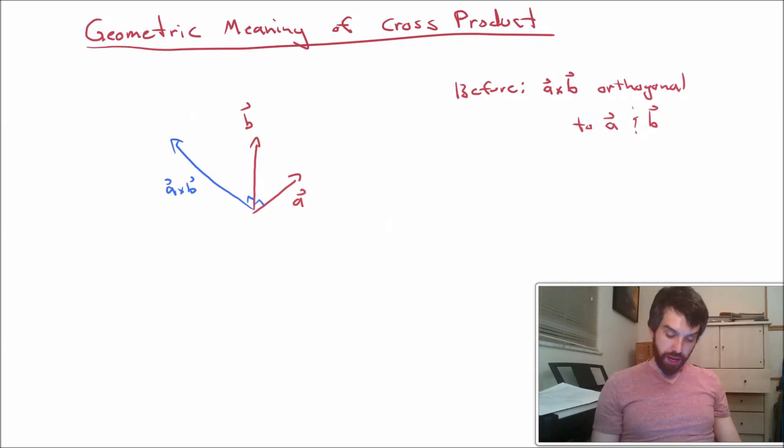Now that's all lovely, but that doesn't tell me anything about the length of this vector A cross B. It tells me its orientation. It tells me it's orthogonal to the vectors A and B. But what does the length of the vector A cross B mean?